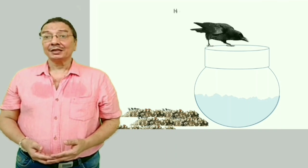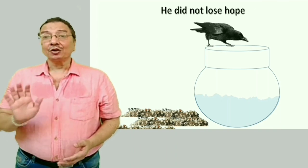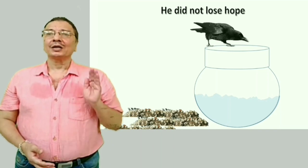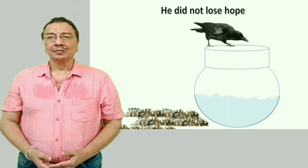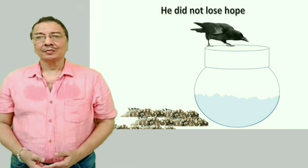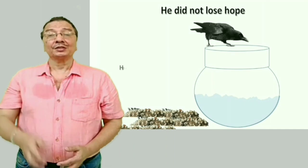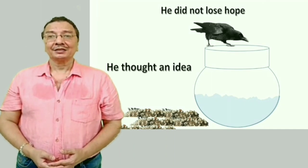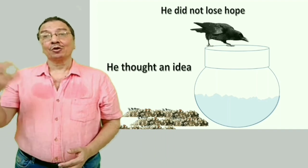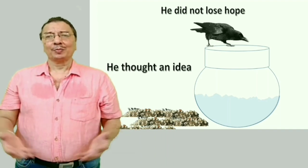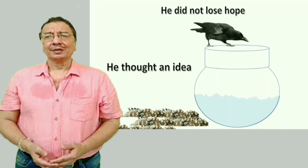Usne aasha nahi chodi — He did not lose hope. 'Did not' is used in past tense. 'Hope' means aasha. He did not lose hope. Usne ek yukti sochi — He thought of an idea. In present tense we say 'think', in past tense we say 'thought'. He thought of an idea.